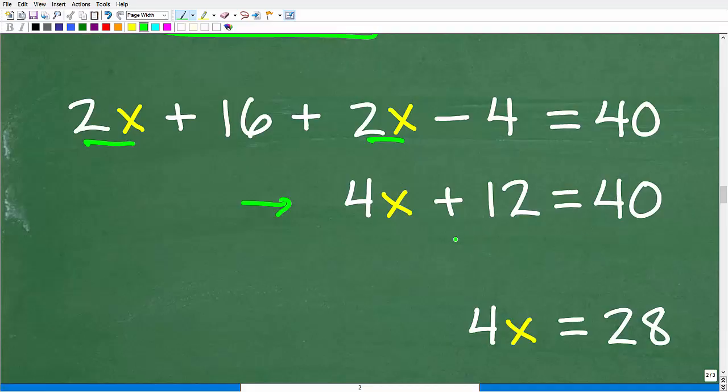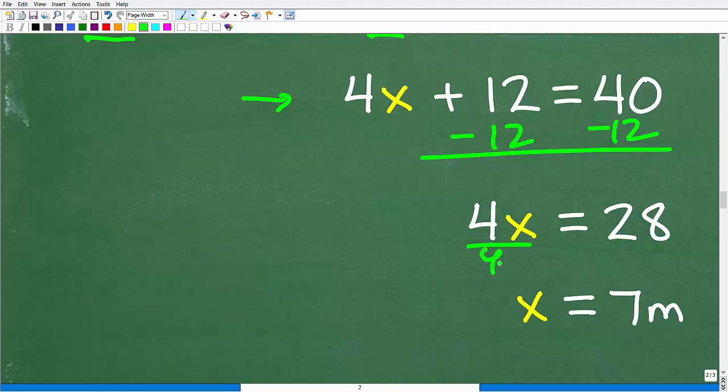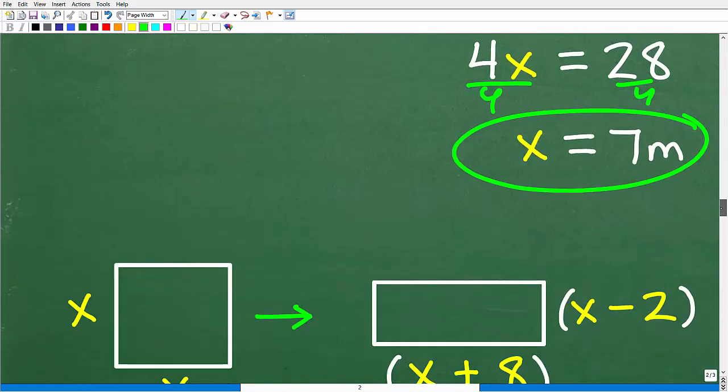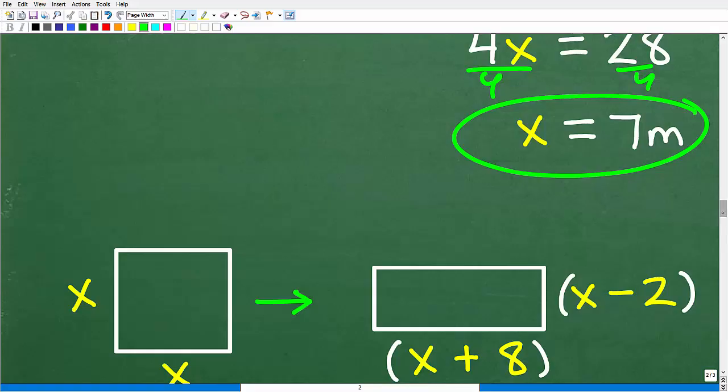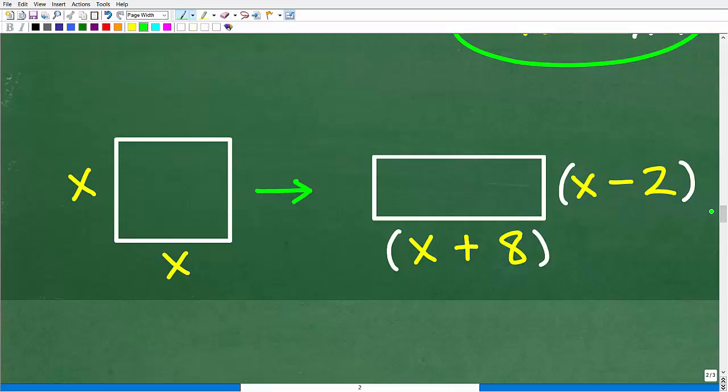All right, so 4x plus 12 is equal to 40. What do we need to do? We have to subtract 12 from both sides of the equation. And we're going to get 4x is equal to 28. And lastly, to solve for x, all we have to do is divide both sides of the equation by 4. So we get x is equal to 7. Now, remember, we are dealing with the units of measure meters. So x is equal to 7 meters. So what does that mean? Well, let's go back to our original setup here. So remember, the variable x represents the side of this square. So that was the question. What is the side of the square? It's not 7. It's 7 meters.